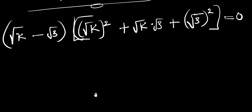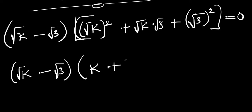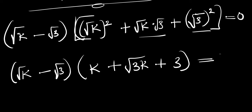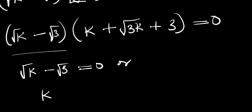Simplifying, we have (√k minus √3) times (k plus √3·k plus 3) equals 0. We can equate each factor to zero: either √k minus √3 equals 0, or k plus √3·k plus 3 equals 0.